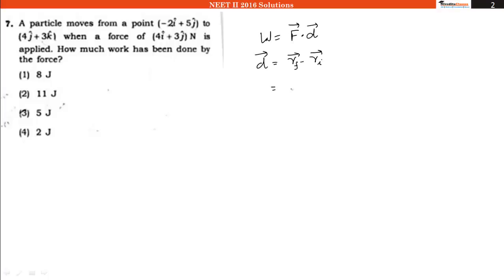Our final position is 4j plus 3k and initial position is minus 2i plus 5j. It is equal to 2i minus j plus 3k vector.